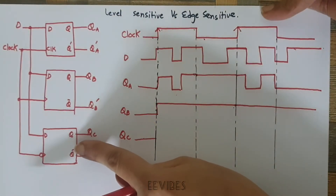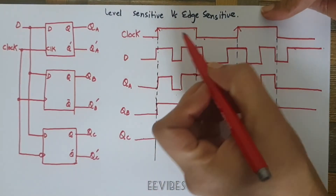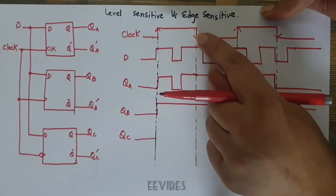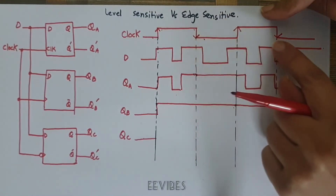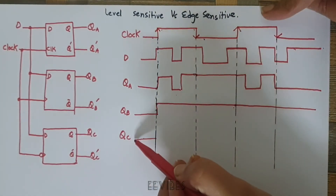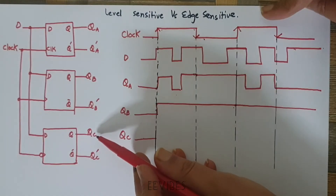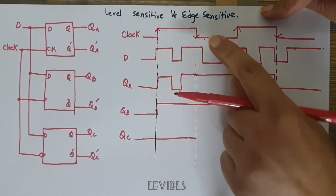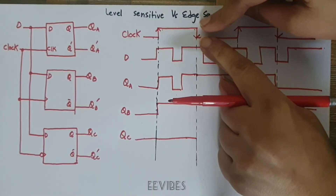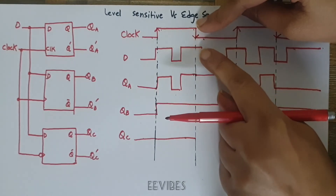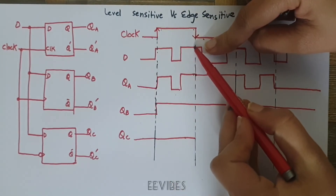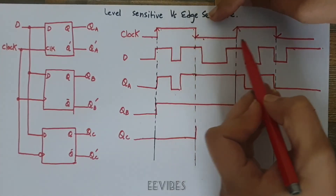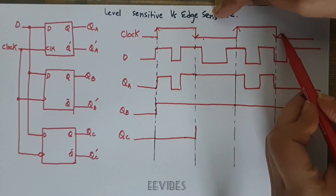Now let's see how the negative edge-triggered D flip-flop works. These are the falling edges of the clock signal. Every time the clock switches from 1 to 0, the value of D is forwarded to the output. Initially the output was 0, and it holds that value until we arrive at the first falling edge. At that falling edge, the input D is equal to 1, so the output switches to 1 and retains that value until the next falling edge arrives.